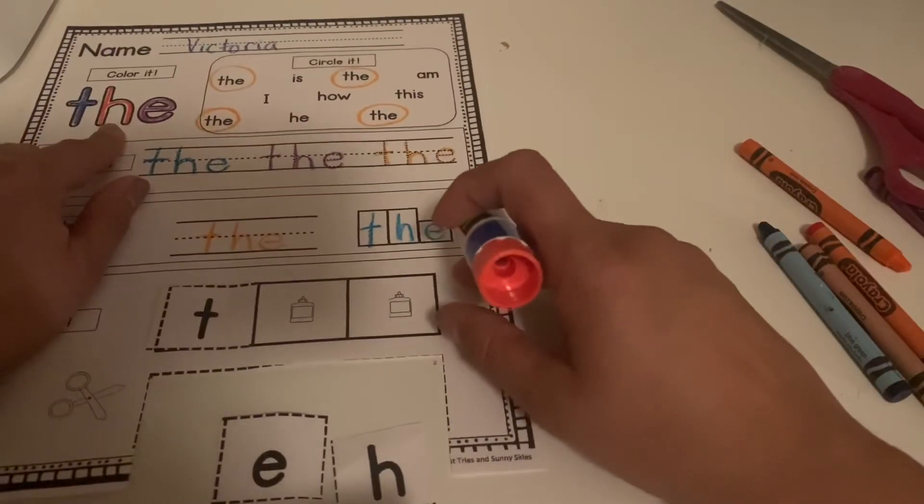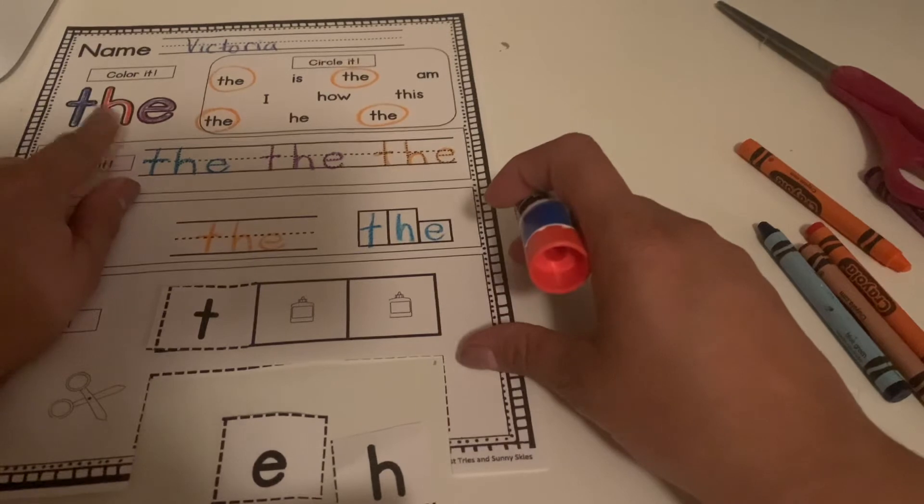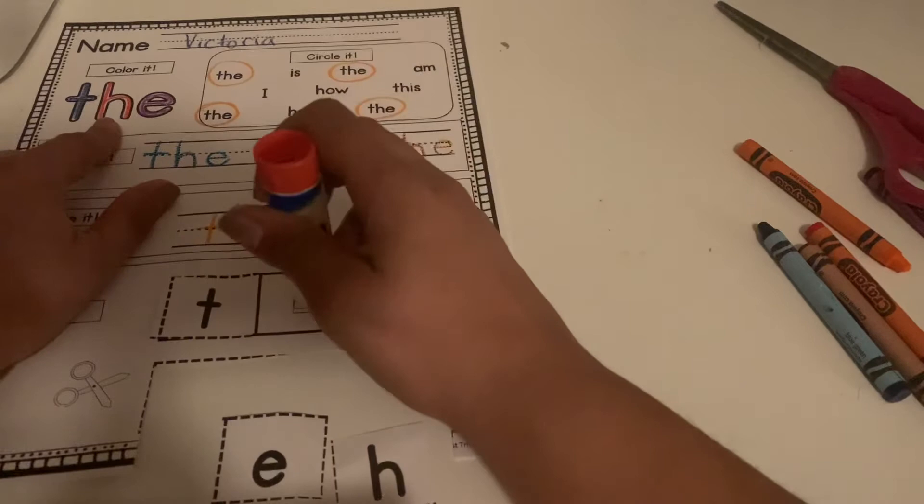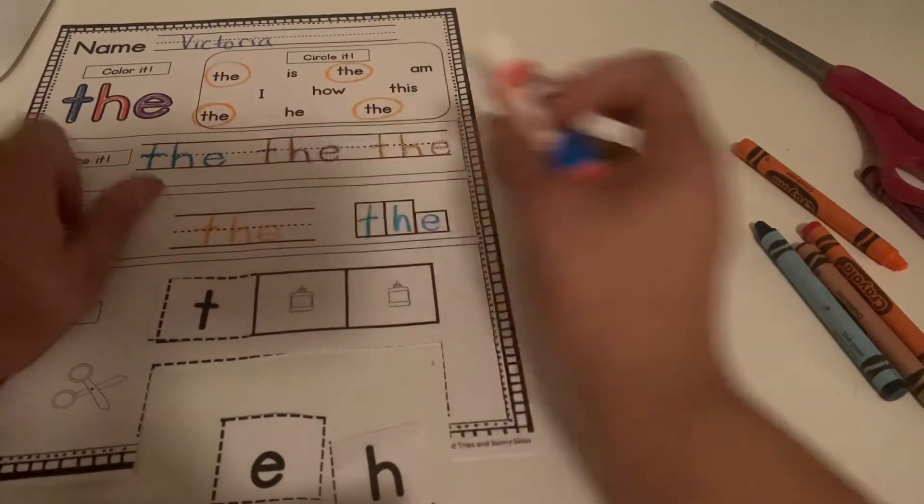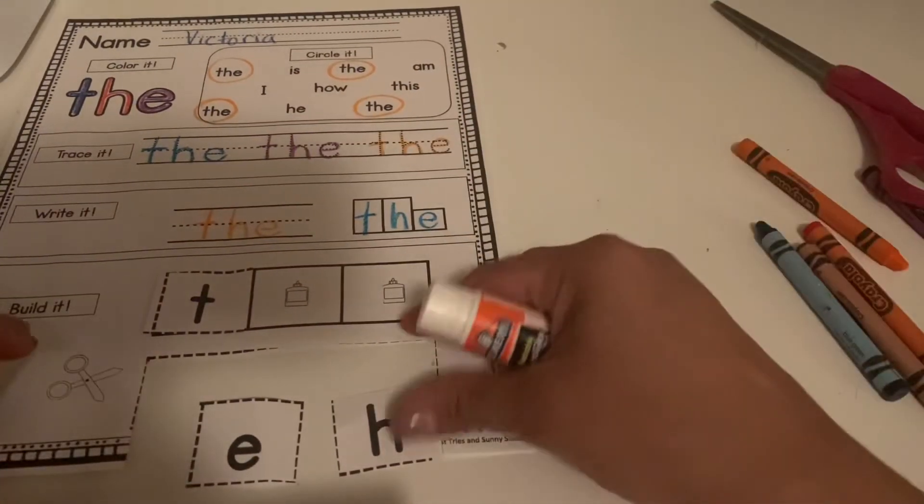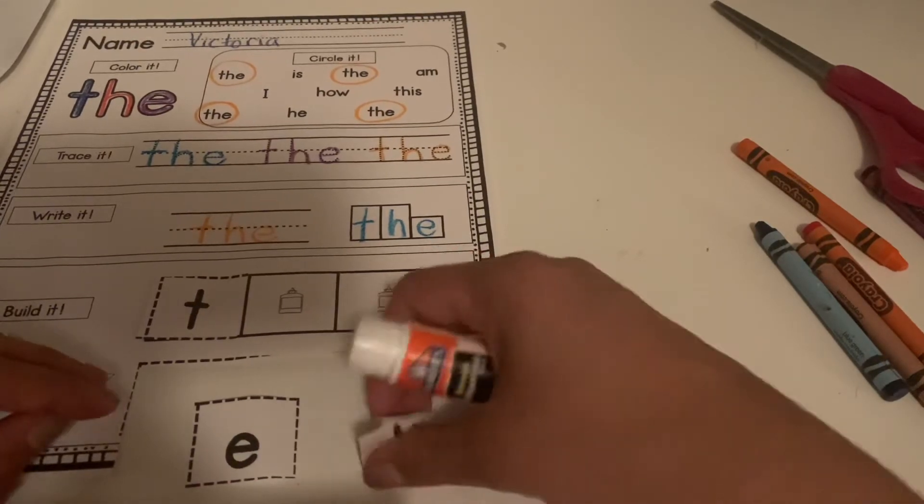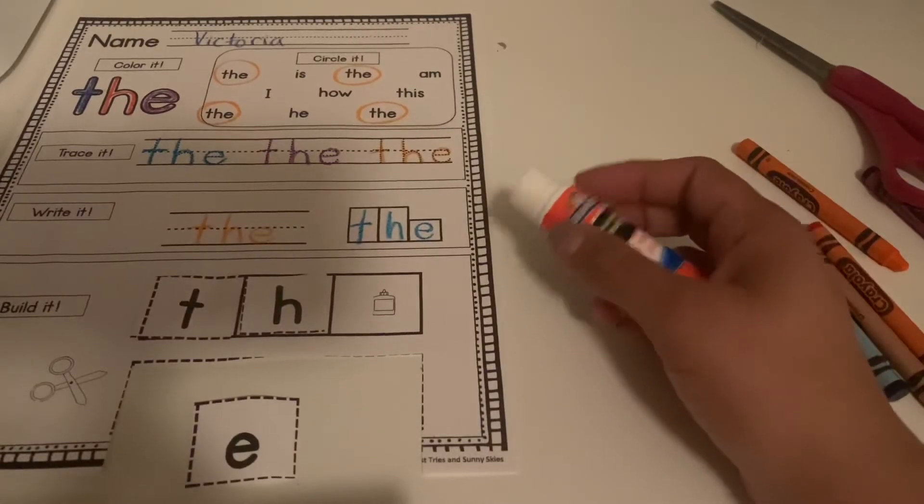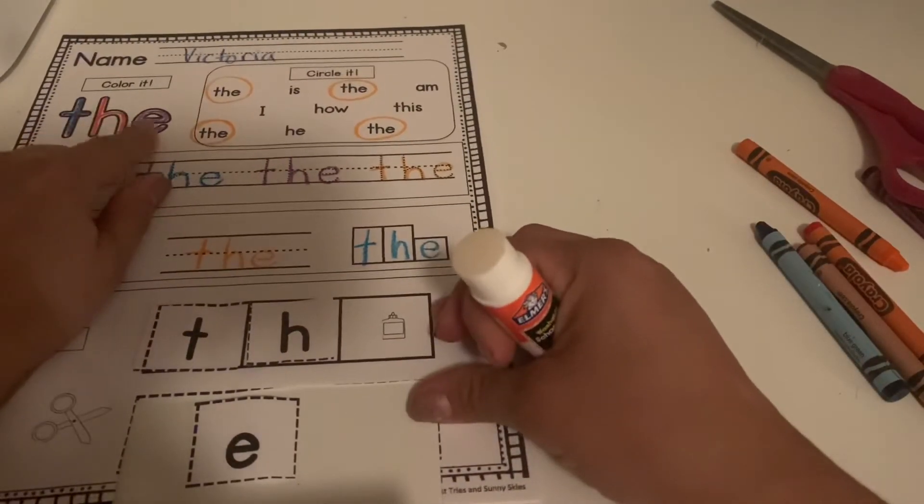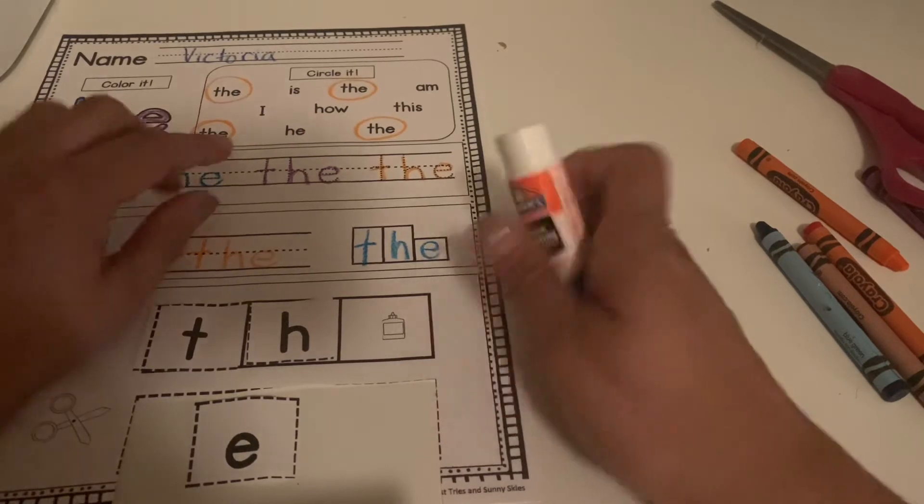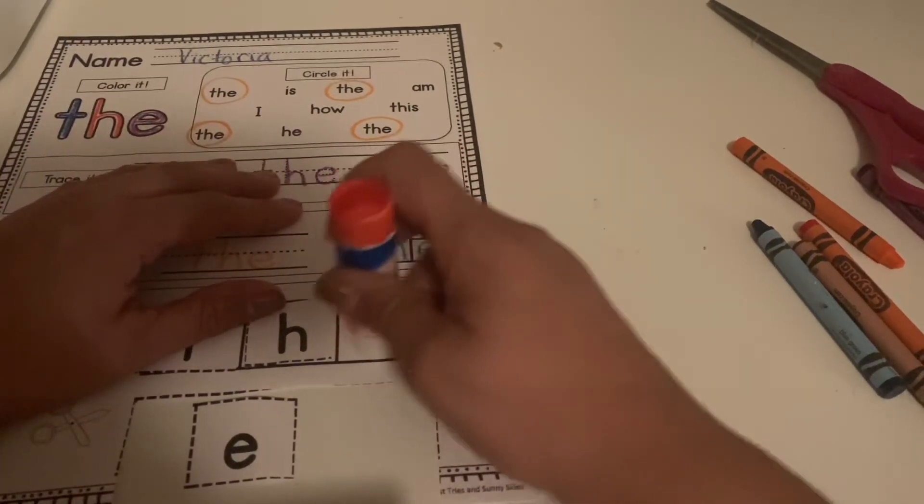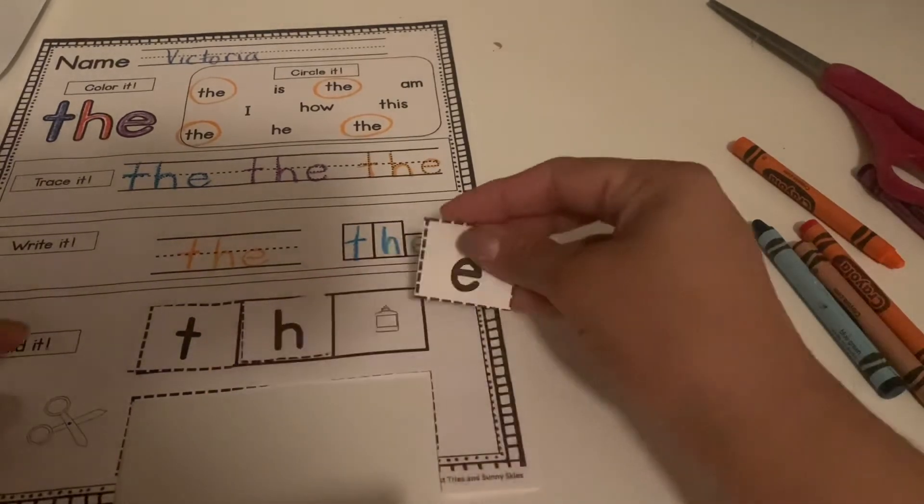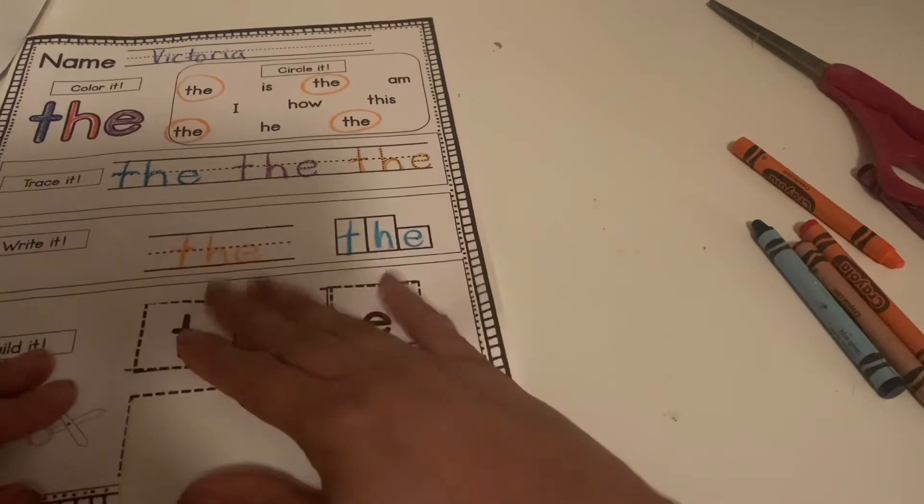Our next letter, go ahead and tell your support person next to you. What letter do we need? H. We need the letter H. So we're going to put glue down and find the letter H. All right, next, our last letter. Go ahead and tell your support person what letter this is. All right, the last letter is the letter E. Go ahead and pick that up and put E. 'The.'